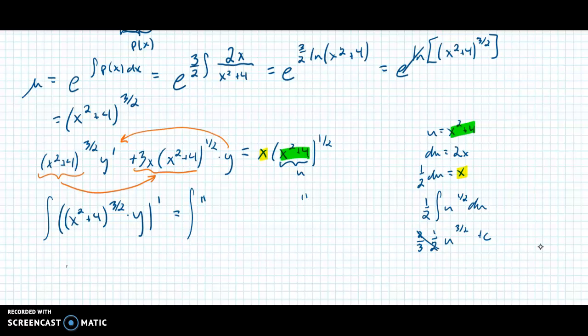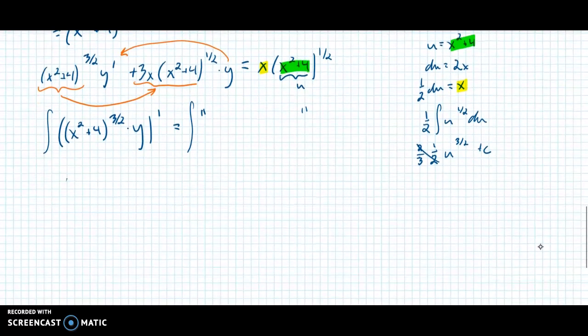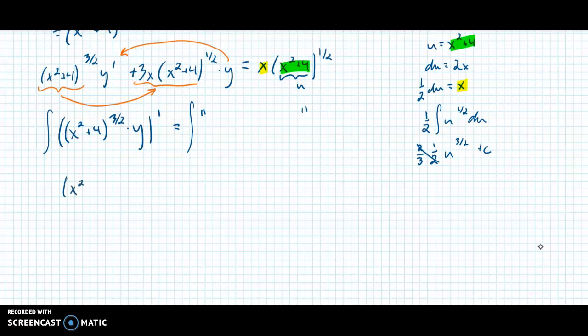That gives me x squared plus 4 to the 3 halves times y equals, now I'm going to write this plus the c, but I'm not going to write u. I'm going to write this thing that's highlighted in green, the x squared plus 4. So I get, oops, let me put my 1 third in there. 1 third, u is x squared plus 4 to the 3 halves, plus a constant.